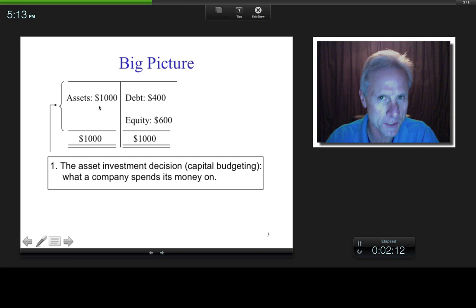But from a finance perspective, hiring that new CEO can either create or destroy firm value depending upon whether or not it's a good or a bad decision. And so we're talking about this from a finance perspective. So the asset investment decision would include, for example, hiring a new CEO. So that's one decision: what a company spends its money on. Well, what's another big picture decision that maybe you see here? Well, what about this side? What's going on right here?